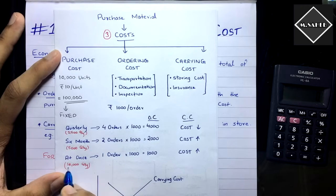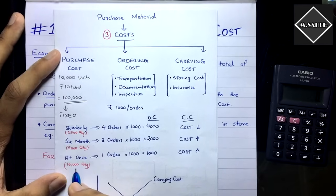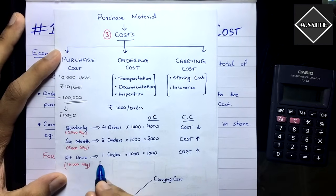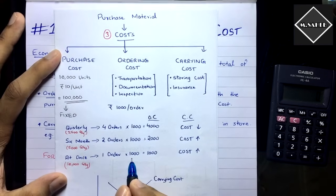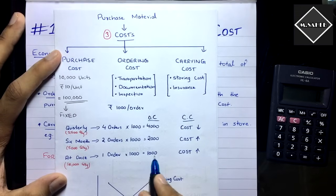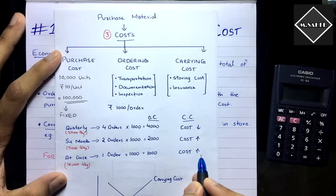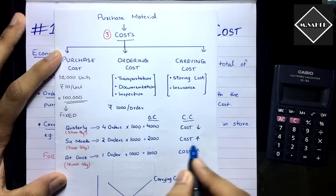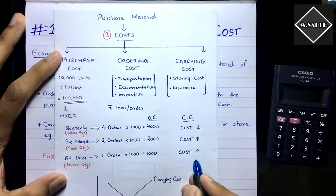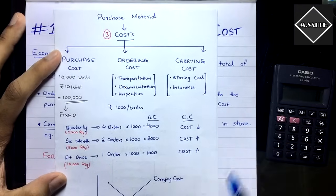In the third scenario, you order all 10,000 units at once on January 1st — just one order. One order × ₹1,000 = ₹1,000 ordering cost, which is even lower. But now 10,000 units arrive at once, requiring an even bigger warehouse. Carrying cost increases even more. So ordering cost keeps decreasing as order quantity increases, while carrying cost keeps increasing — they have a negative relationship.